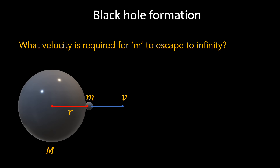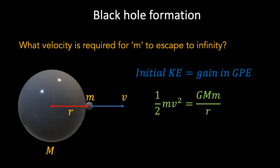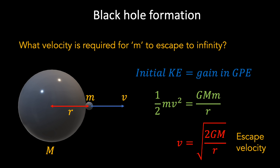If we are able to launch little m with an initial amount of kinetic energy equal to G big M little m over r, then it will escape the gravitational field of big M. To calculate the velocity required, we simply equate the kinetic energy with the potential energy and write ½mv² equals G big M little m over r. Rearranging for v, we find that v equals the square root of 2G big M over r. This velocity is referred to as the escape velocity of big M. If we substitute in the mass and radius of planet Earth, we find the escape velocity is approximately 11 km per second, whereas for Jupiter it is roughly 60 km per second.